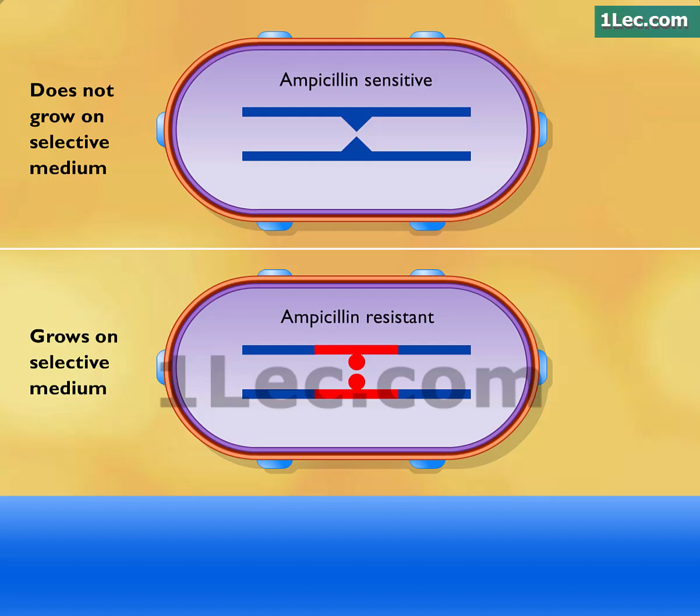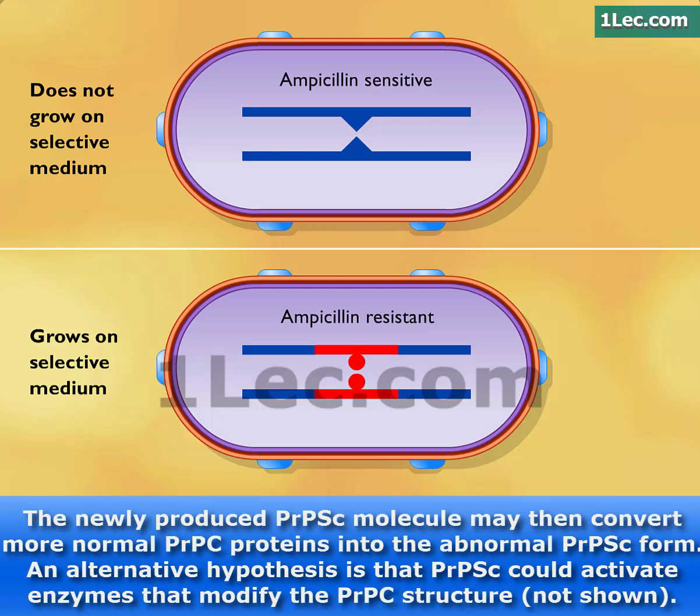In the laboratory, cells are plated on selective media so that only the transformants will grow.